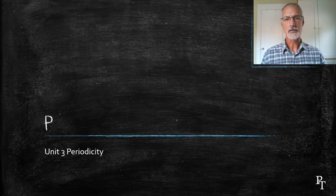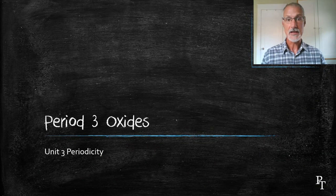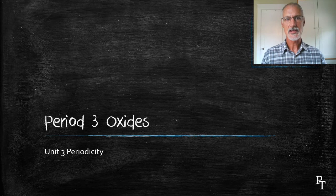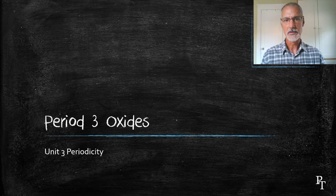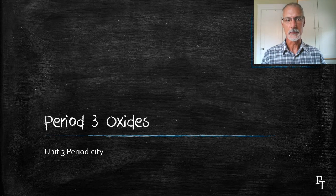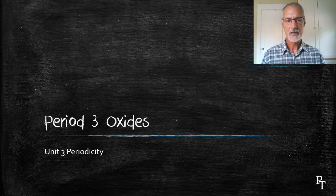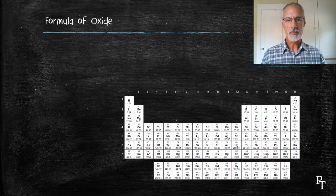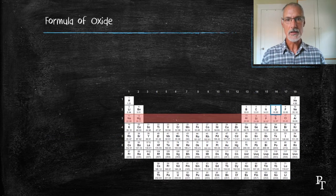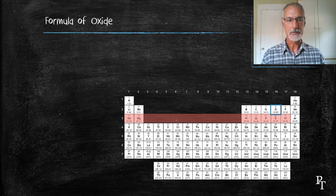In our last few programs, we've taken a look at trends moving down a family, or down a group. Now we're going to look at a trend moving across the periodic table, and particularly those of period number 3. We're going to look at the formula of the oxide combining with the various elements found in period number 3.